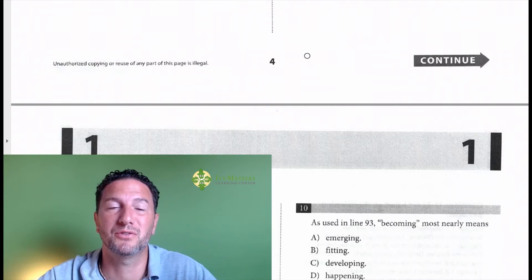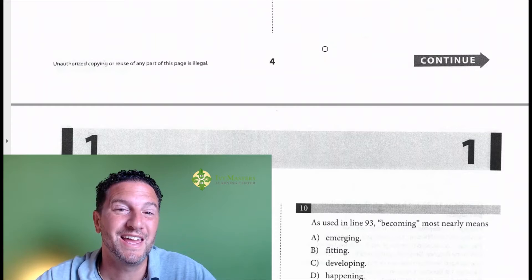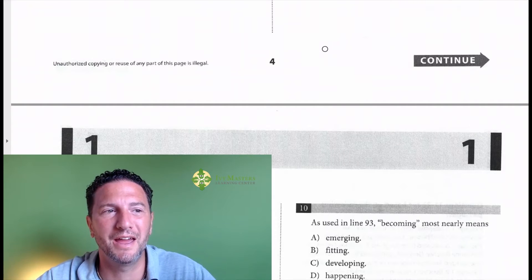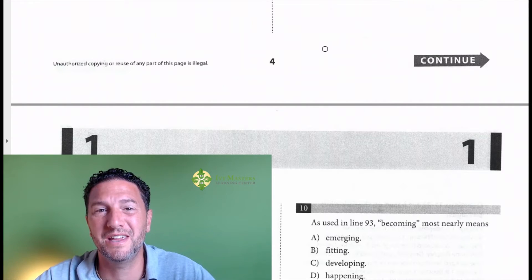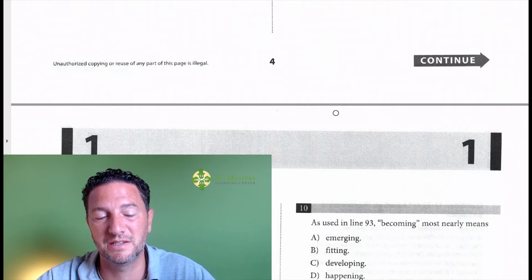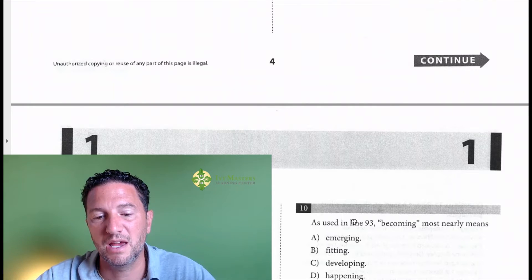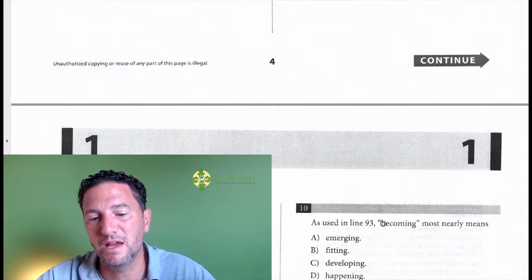My name is Paul Bazooka from MastersOnETC and MastersOnETC.com. Today we are going to look at Test 5, Section 1, Number 10, which is vocabulary in context. Number 10 reads: As used in line 93, becoming most nearly means.